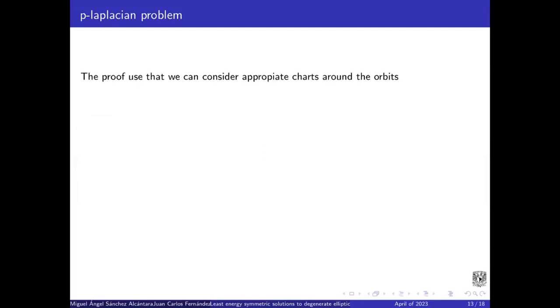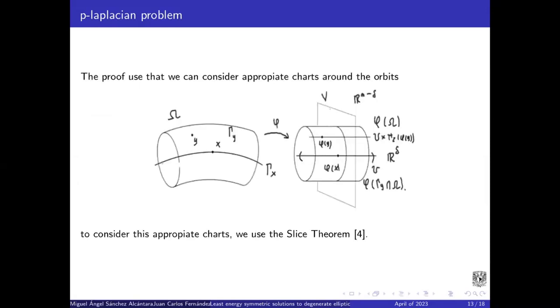The proof is that we can consider appropriate charts around the orbit. And to consider this appropriate chart, we use the slice theorem.